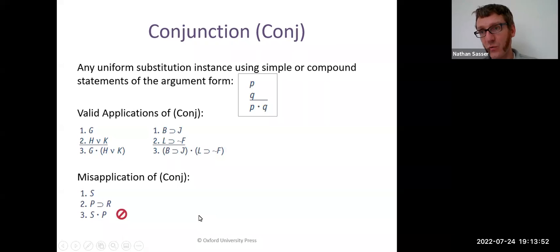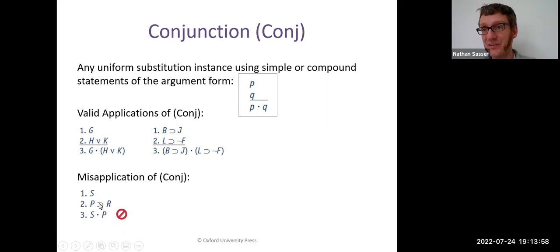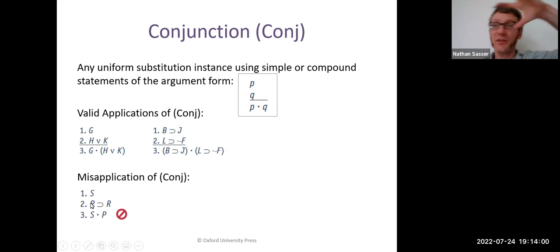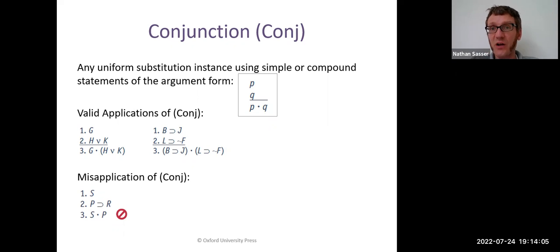A misapplication: you've got S and 'if P then R', and you conclude 'S and P'. Why doesn't that work? Because you're not given P — you're given a conditional statement. That's just the antecedent of the conditional. You can't take out one part of a compound statement and try to apply the conjunction rule to it.